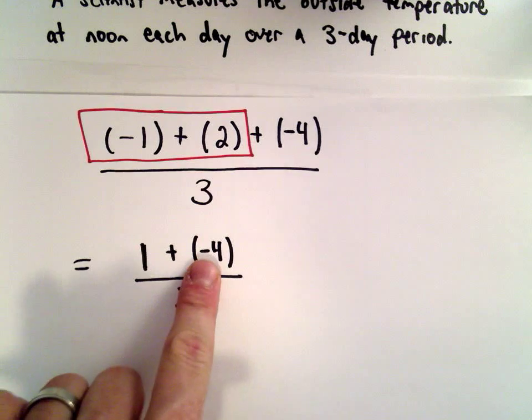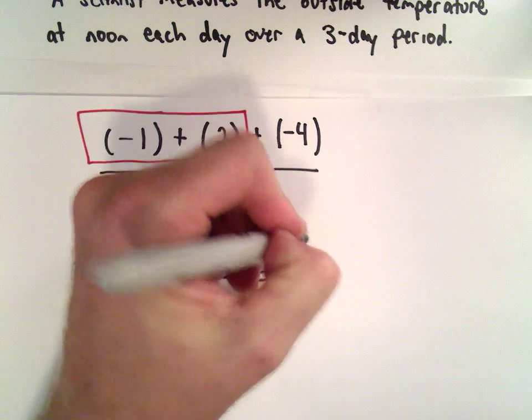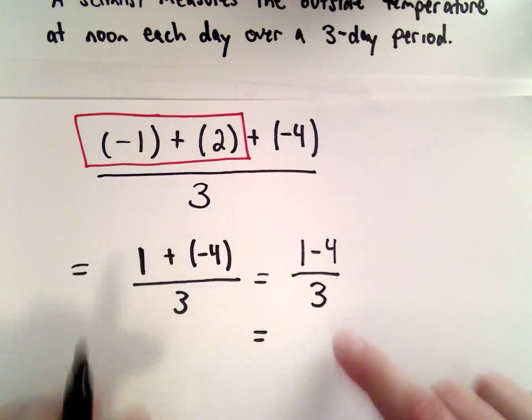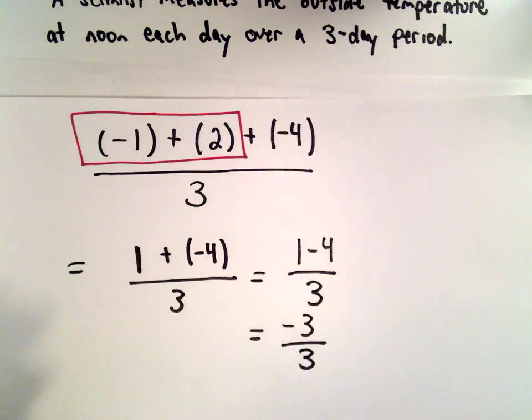One plus negative four, or equivalently, that's one minus four. One minus four, that's going to give us negative three. Again, we're dividing by three.